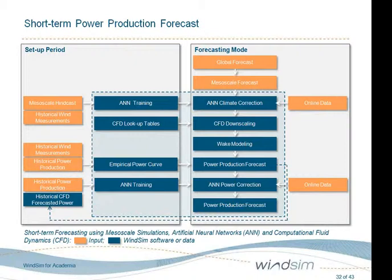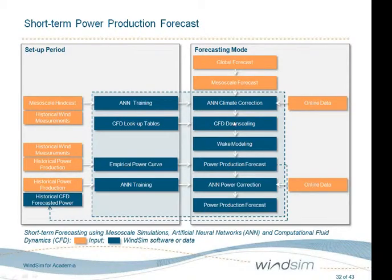To summarize our forecasting model: we have a setup period where we train the neural network against historical data and run detailed CFD models. In order to run quickly during forecasting mode, we create lookup tables for CFD downscaling. Wake modeling is also done in forecasting mode. Once production data is available, we can train on historical production data, introduce empirical power curves, and incorporate online data — wind data or power data — which further increases accuracy.